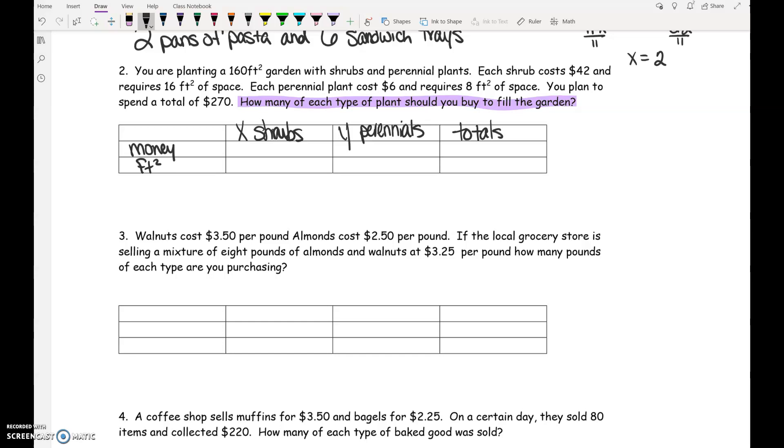Okay. My first amount of money is $42. That's my shrubs. So I've got $42 per shrub. If you can use the word per, that's definitely telling you that you're going to multiply probably times one of your variables. And my perennials are $6 per perennial. And that's going to add up to a total cost of $270. So that's all of the money parts of the problem.